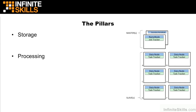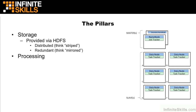These two pillars — storage and processing — are represented in this diagram that we see throughout this course. The storage side provides HDFS; think of it as a distributed, redundant file system. In the HDFS chapters, we talk in more detail about these. The processing side is provided by the MapReduce daemons, or the green parts of this diagram. Think of this as being a distributed processing system.